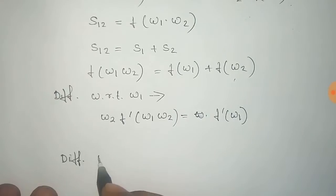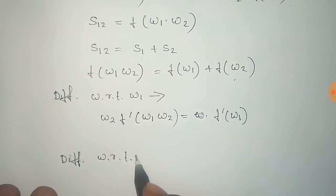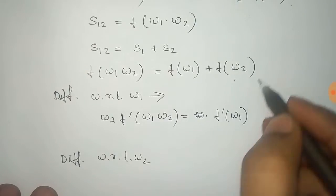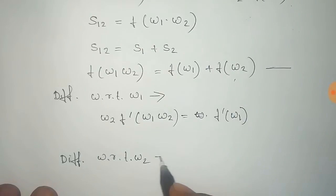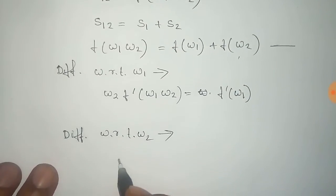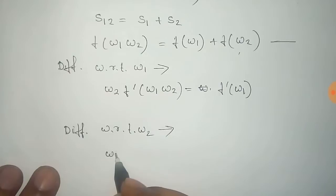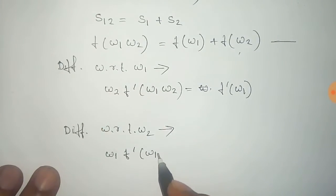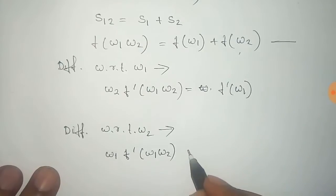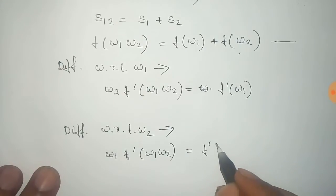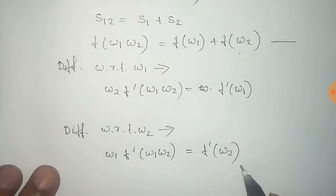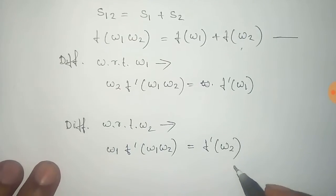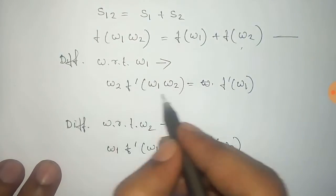Similarly, differentiating the same equation with respect to Omega2, Omega1 is constant so it comes out of the derivative. In that case f(Omega1) gives zero and the remaining part is f'(Omega2).